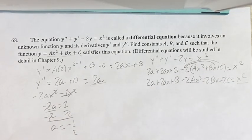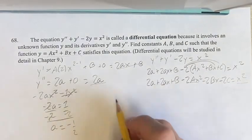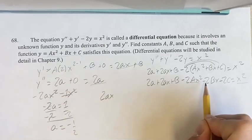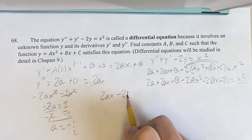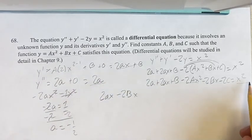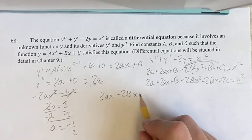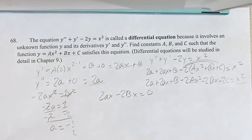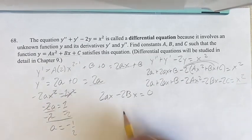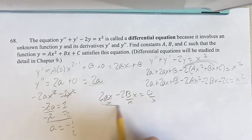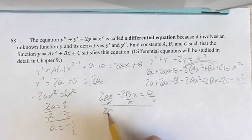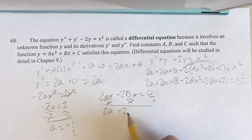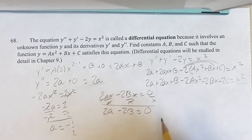Now, what do we know about the x terms? Well, we have 2ax minus 2bx, and that is equal to 0. There's no x term on the other side. We know that we can divide by x all throughout. So, we get 2a minus 2b is equal to 0 divided by x is 0.